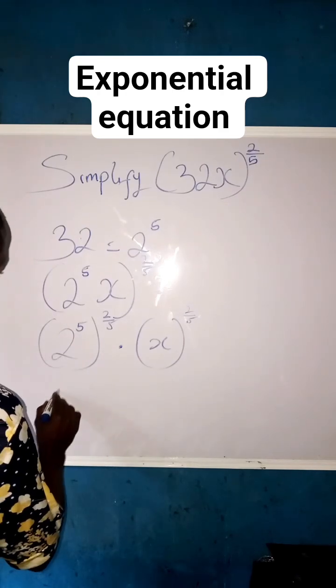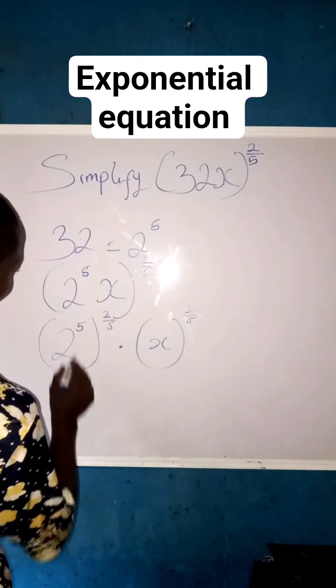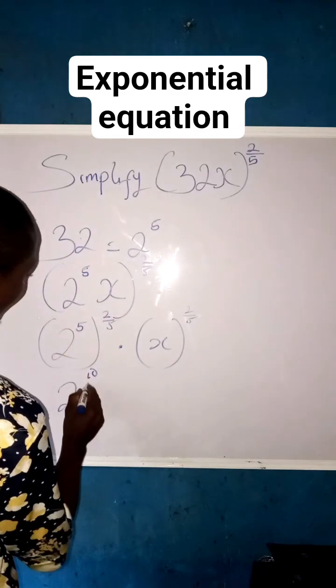We now have 2, remember this 5 multiply this 2, so 5 times 2, 5 times 2 is 10, raised to power 10 all over 5.